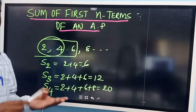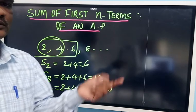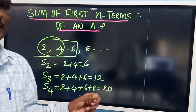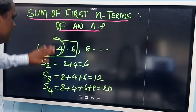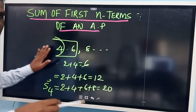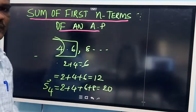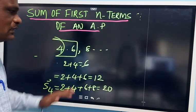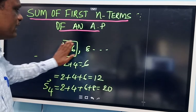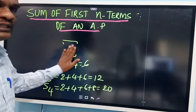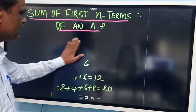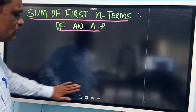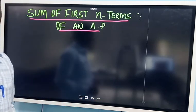So that is the meaning of sum of first N terms. If N equals 2, sum of first 2 terms; if N equals 3, sum of first 3 terms. There is a formula to find out — there is no need to add individually. If I ask the sum of 100 terms, you don't need to add all 100 terms one by one. You can find out the sum using one formula, which we will now derive.